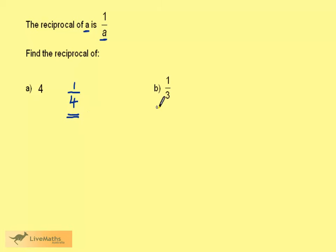When we come to discuss the reciprocal of 1 third, this must be 1 over 1 third. This could be written as 1 divided by a third. 1 can be written as a fraction, 1 over 1.